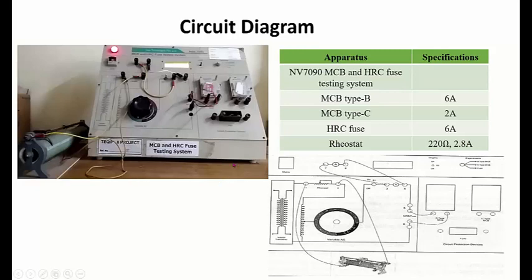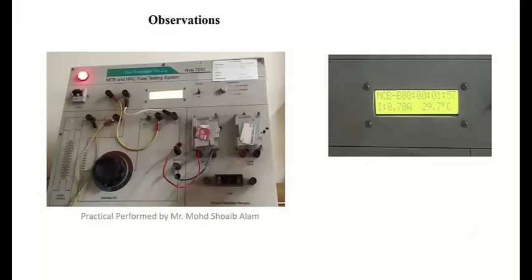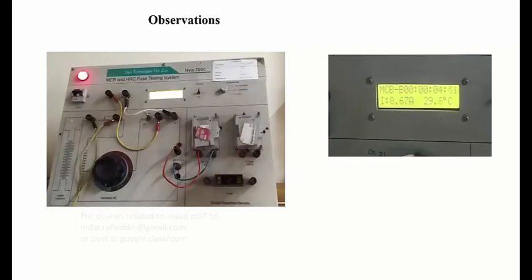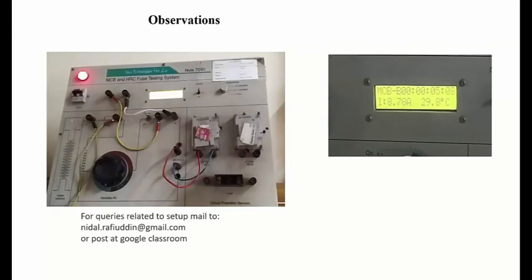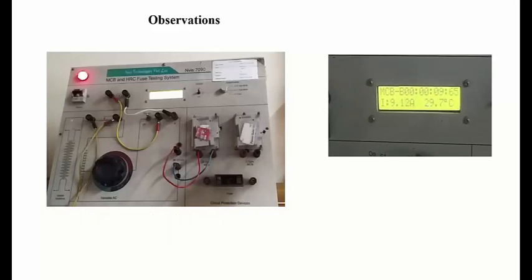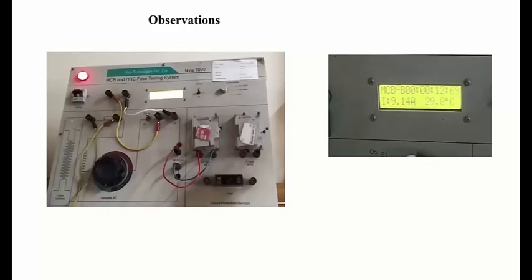Shown on the left side is the connection that had been done using the circuit diagram. We'll be performing experiment testing type B MCB. We'll be taking four readings starting from 8 ampere, then 9 ampere, and so on. Shown here is the test corresponding to current taken as 9 ampere.